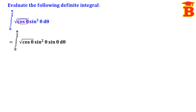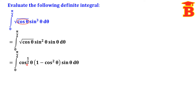So the integral from 0 to π/2 becomes root of cos θ into sin squared θ into sin θ dθ. Root of cos θ is cos to the power half θ. Sin squared θ is 1 minus cos squared θ. Multiplying cos to the power half θ inside the bracket: cos^(1/2) × 1 gives cos^(1/2)θ, and cos^(1/2) × cos² gives cos^(5/2)θ, since we add the powers: half plus 2 equals 5/2. So the integrand becomes cos^(5/2)θ into sin θ dθ.